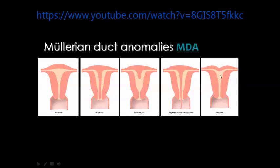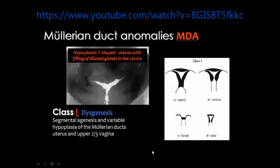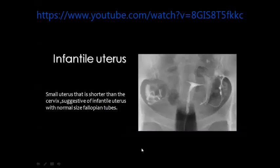Class 1 uterine anomalies are known as agenesis of the uterus, with agenesis or hypoplasia of the uterus as well as the upper two-thirds of the vagina. You can see a very small uterine cavity but the tubes are present and patent — this is what we call the infantile uterus where the size is very small but the fallopian tubes are normally developed and patent, spilling the injected contrast material into the peritoneal cavity.